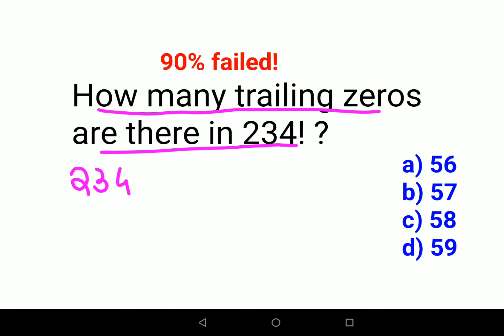All you have to do is divide the question. So first we will divide 234 by 5. Whatever answer you get here, you will add it to 234 divided by 5 squared, that is 25. Then again, we have 234 divided by 5 cubed, that is 125.